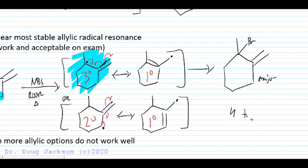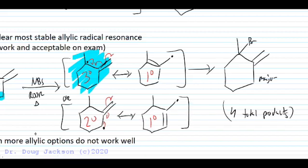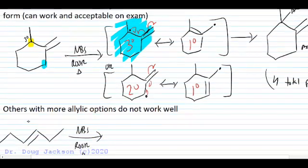The more allylic positions you add and the more resonance forms that are different from one another, you get more products in the mixture and you limit the usefulness of this reaction. So typically you want to use this early in a synthesis if you are going to use it.